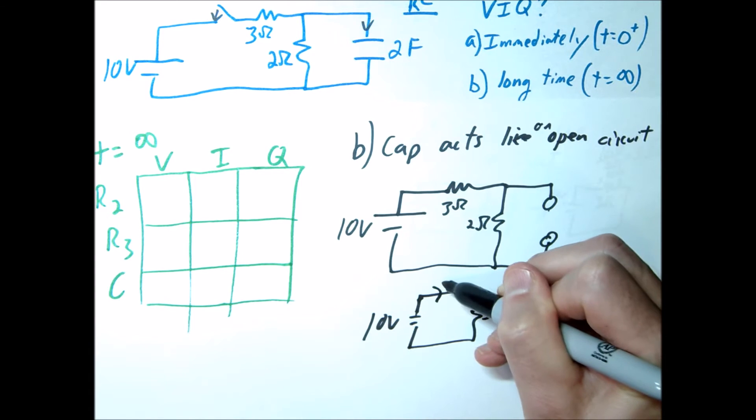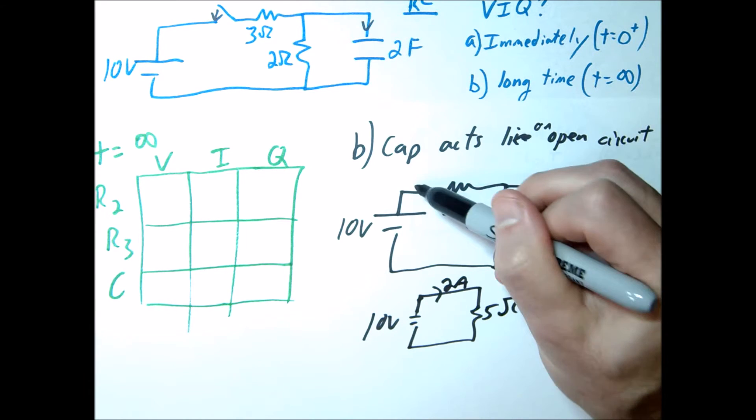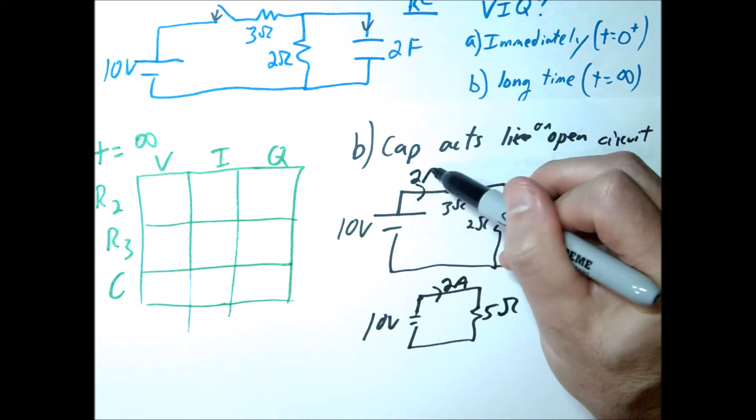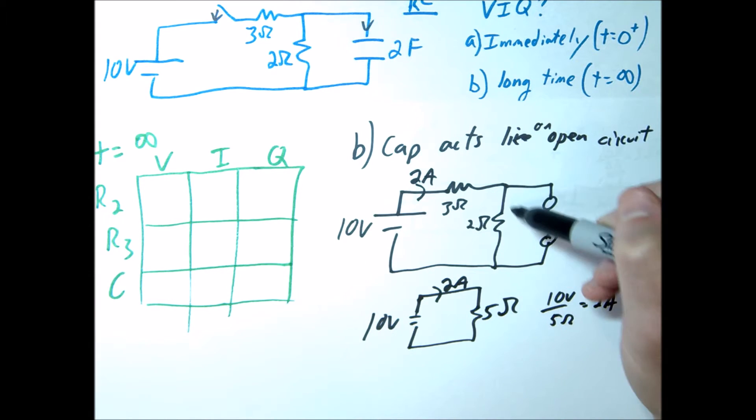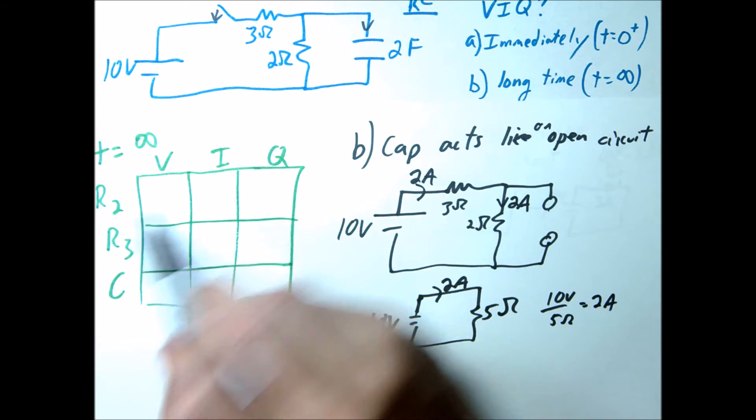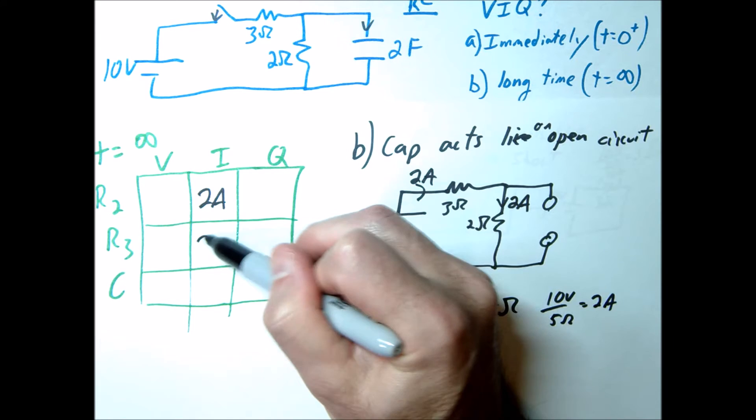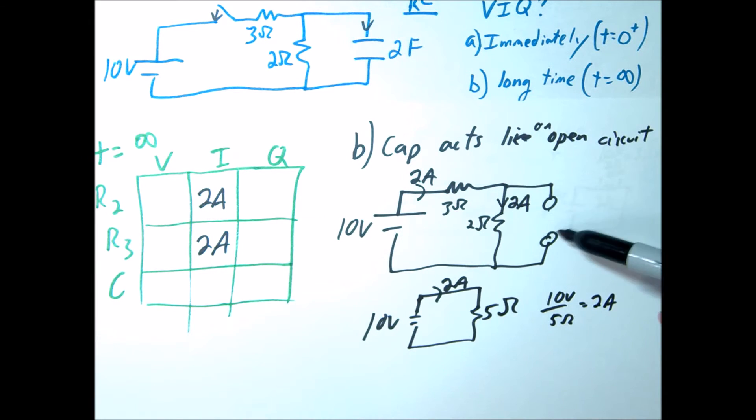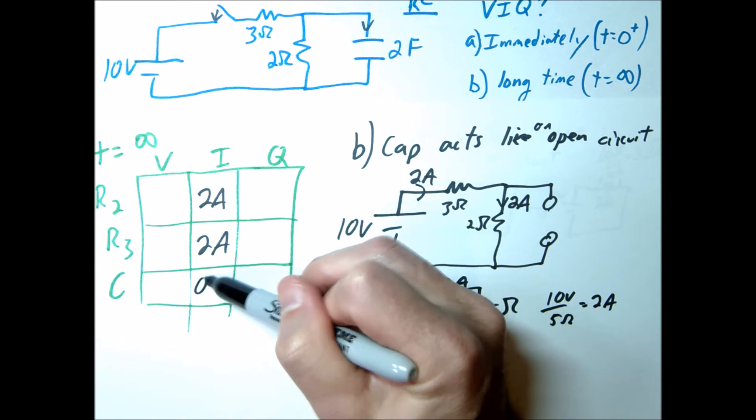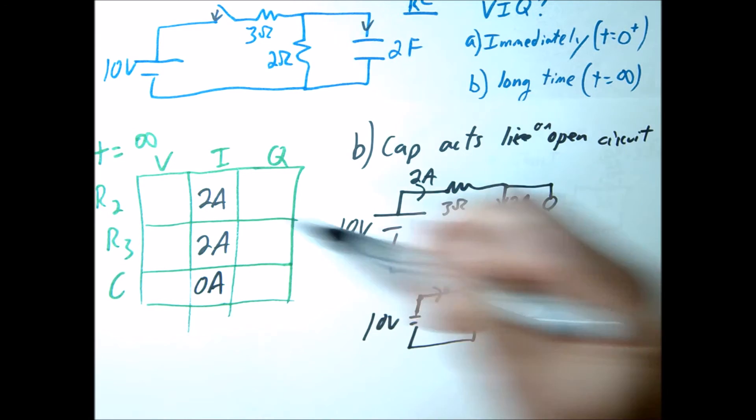There's 2 amps of current going through here. So if we redraw this on here, it means we have 2 amps of current moving through this resistor, 2 amps of current moving through here. So R2, this is going to be 2 amps, this is going to be 2 amps. Again, since this is an open circuit, this means there would be 0 amps going through the capacitor here.